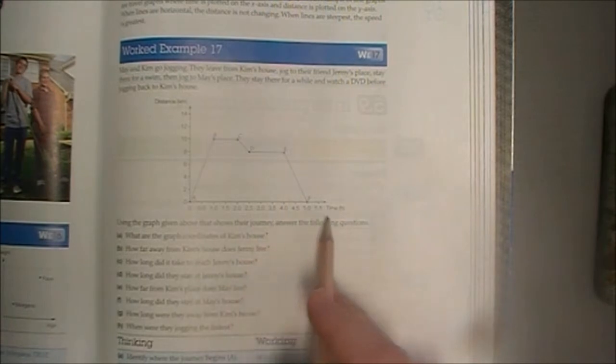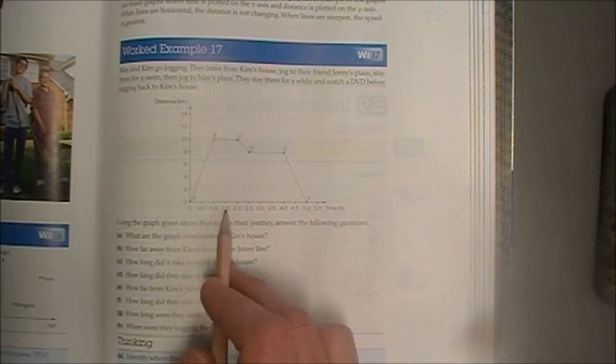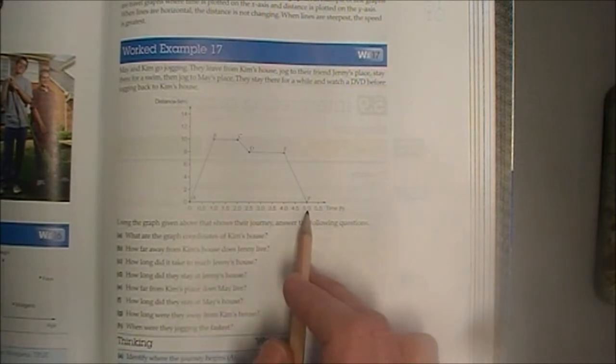So let's have a look at our graph. We have time along the bottom axis here, along the x-axis, time in hours. We can see half an hour, one hour, one and a half hours, and so on, up to five hours.